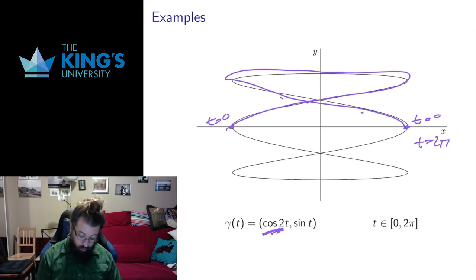But still, as t goes along I go here, I go here, I go here. Sorry, this should be t equals π. Go here, go here, go here, end up t equals 2π back here.